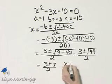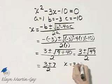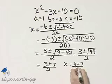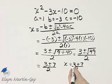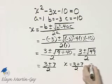For example, x is equal to 3 plus 7, all over 2. And that is what? Well, 3 plus 7 is 10. 10 divided by 2 is 5.